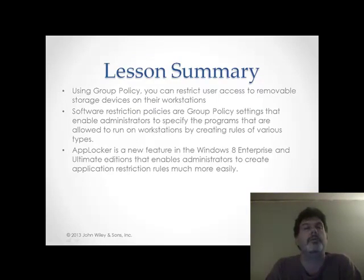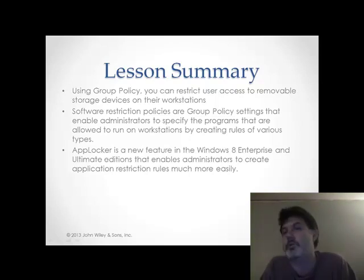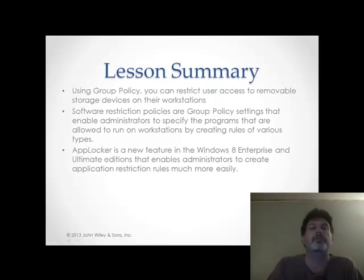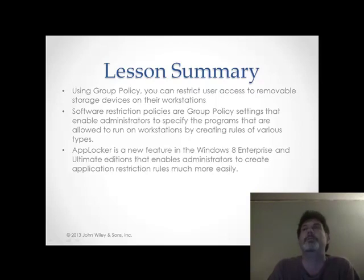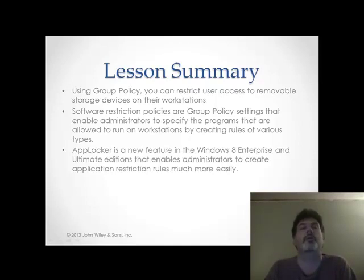That's a pretty simple chapter. Lesson summary: using group policy, I can restrict user access to removable storage devices on their workstations. That group policy can either be a domain group policy or one sitting on the local machine for either the computer as a whole or for specific users and groups. I can also use software restriction policies to homogenize my network environment through group policy settings, allowing me to specify programs that are allowed to run on workstations by creating a set of rules. Because software restriction policies tend to be cumbersome to implement, we have a new tool called AppLocker — a wizard-based tool available in Windows 7 and 8, only available in Enterprise and Ultimate Editions — that enables administrators to create application restriction rules much easier than the old-fashioned way. That's it for this chapter. I hope you have a great week and we'll see you next week.